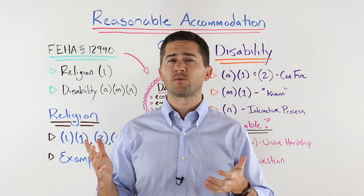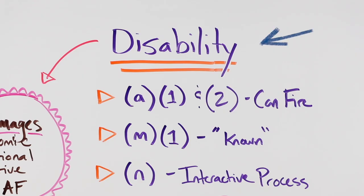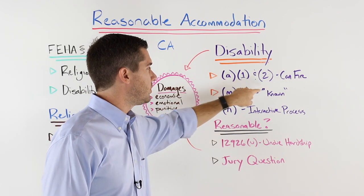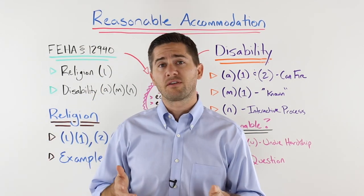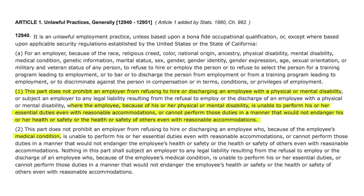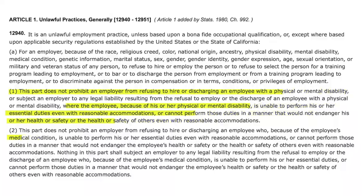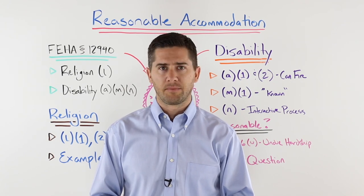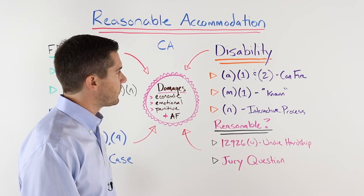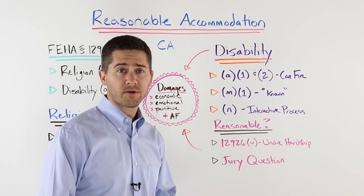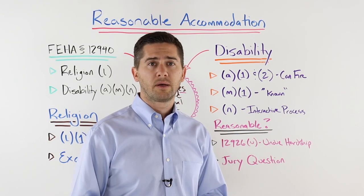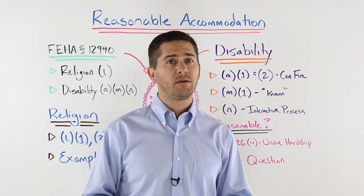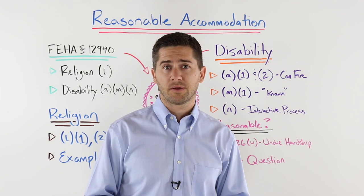When most people hear about reasonable accommodations, they're thinking about disabled workers. In the California Fair Employment and Housing Act, Section 12940(a)(1) and (2) say that employers are allowed to fire employees who have physical or mental disabilities if those employees cannot perform the essential functions of the job with or without a reasonable accommodation. Basically, in the inverse: if the employee can do the job and they're disabled, the employer can't fire them for that disability. If the employee can do the job with a reasonable accommodation, the employer can't fire them for that disability.